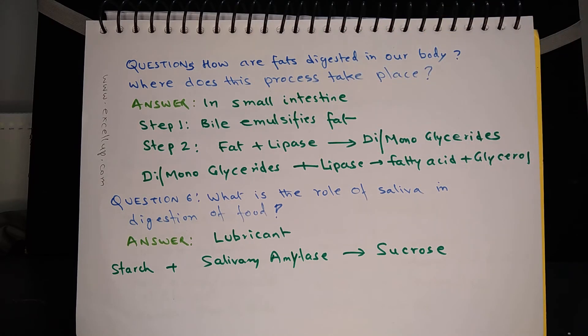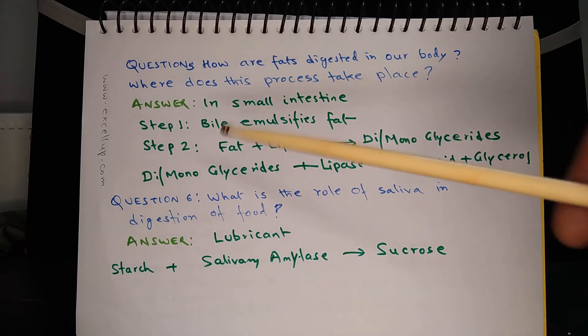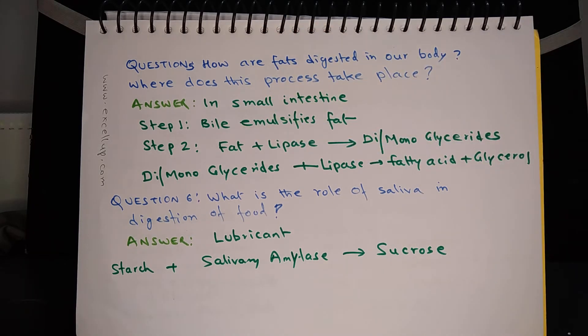After that, in step two, lipase is the enzyme which works on fat. First of all, lipase converts fat into di- or monoglycerides, and after that lipase converts these glycerides, di- and monoglycerides, into fatty acid and glycerol. So these are the end products of digestion of fat: fatty acid and glycerol.